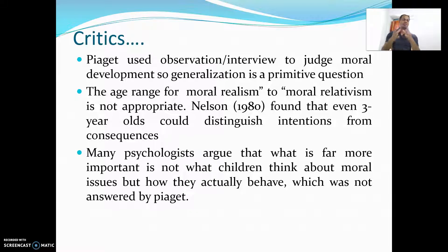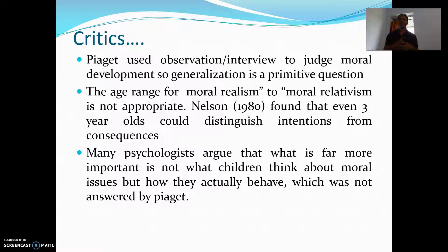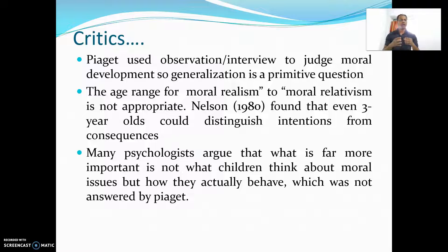In terms of criticism, Piaget used only qualitative techniques like observation and interview to assess moral development, so generalization is questionable. The age ranges given for moral realism and moral relativism are not fully appropriate — as Nelson rightly found in 1980, three-year-olds could already distinguish intention from consequences. Many psychologists also argue that what is far more important is not what children think about moral issues but how they actually behave, which was not answered by Piaget.